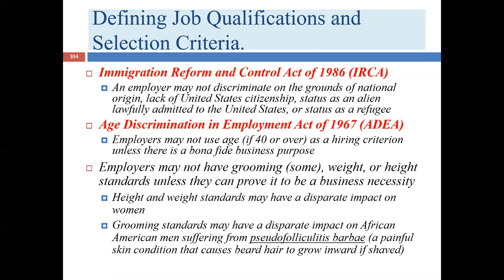Under IRCA, if two equally qualified candidates exist — one a U.S. citizen and one not — the employer is allowed to prefer the citizen in a tiebreaker situation. But if the non-citizen is significantly more qualified, the employer must pick the non-citizen. Some governmental positions and security-clearance roles may lawfully require citizenship. You simply cannot say 'we're a patriotic company and we want U.S. citizens' as a general preference.